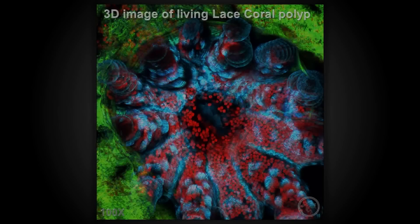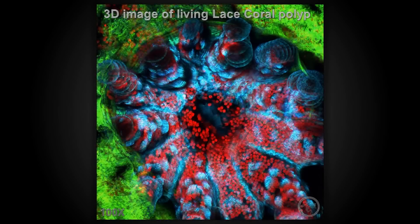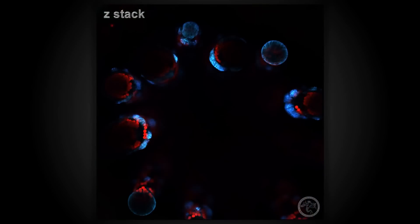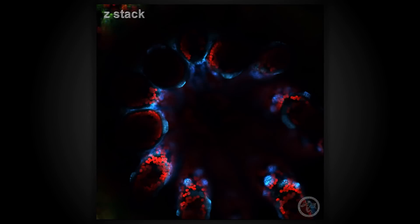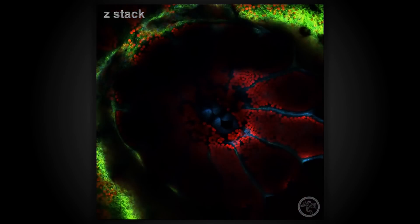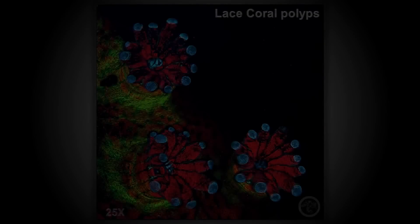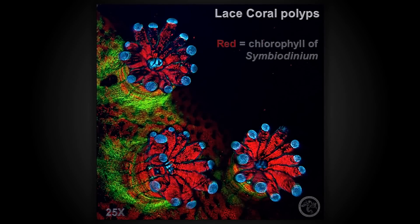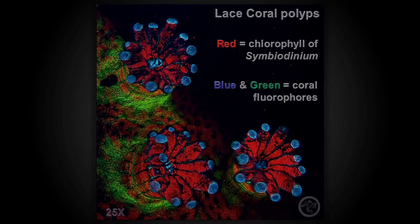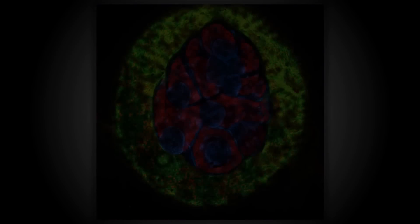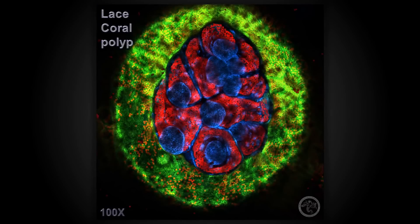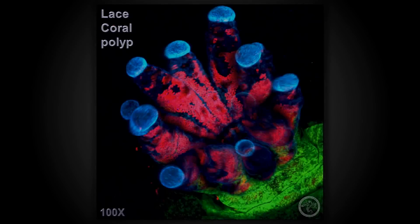Confocal microscopy can give high-resolution images by eliminating light from outside of the focal plane. Layers of data from different focal planes, known as z-stacks, can be collected and reassembled into three-dimensional images. Confocal images can clearly show the distribution of different fluorophores. Individual red dots of symbiodinium can be seen in the tentacles and throughout the sinus arc. The fluorescent protein, represented by the blue color in this coral, seems to be closely associated with biological structures containing nematocysts, or stinging cells.